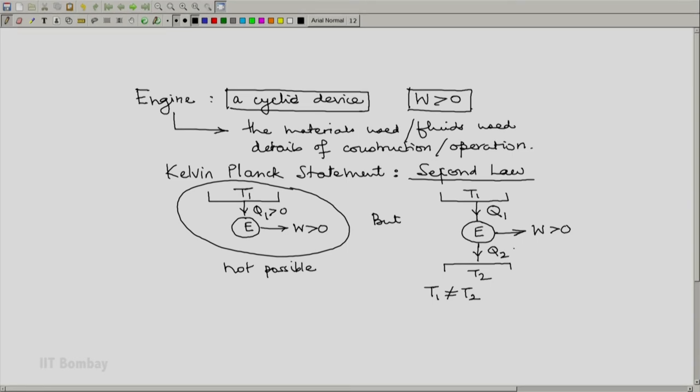Let us have this nomenclature: reservoir T1 supplies heat Q1, and reservoir T2 is the reservoir to which the engine rejects heat Q2. We have shown that this is possible.